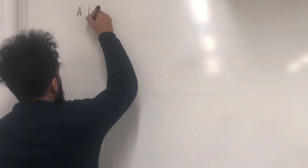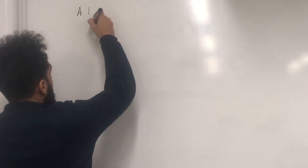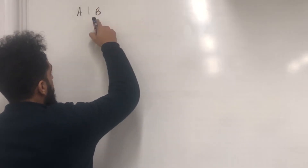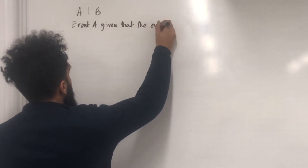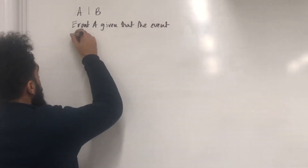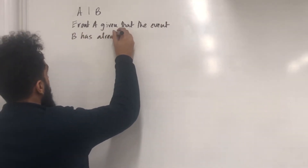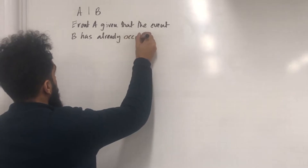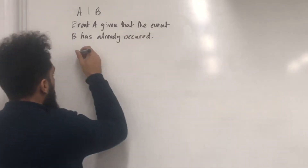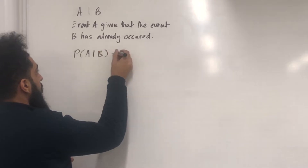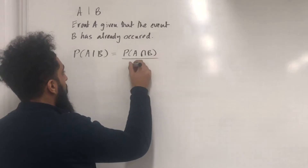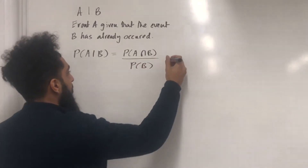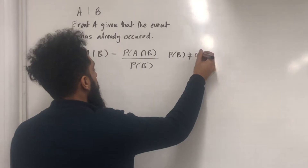Event A, given that — the vertical line represents 'given that' — event B has already occurred. The probability of A given B is equal to probability of A intersect B, divided by probability B, provided that probability B is not equal to 0.